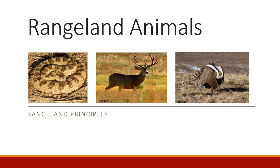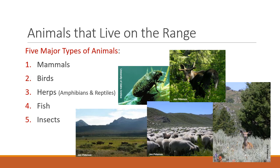There's no doubt that the kind and diversity of animals on rangelands is amazing, and it's really quite a bit of the allure of rangelands. So today in Rangeland Principles, we're going to talk about animals. There are a lot of different ways to categorize animals, but today we're just going to focus on these five categories: mammals, birds, herps — which includes amphibians and reptiles — fish, and insects. Let's not forget insects. They're highly important.